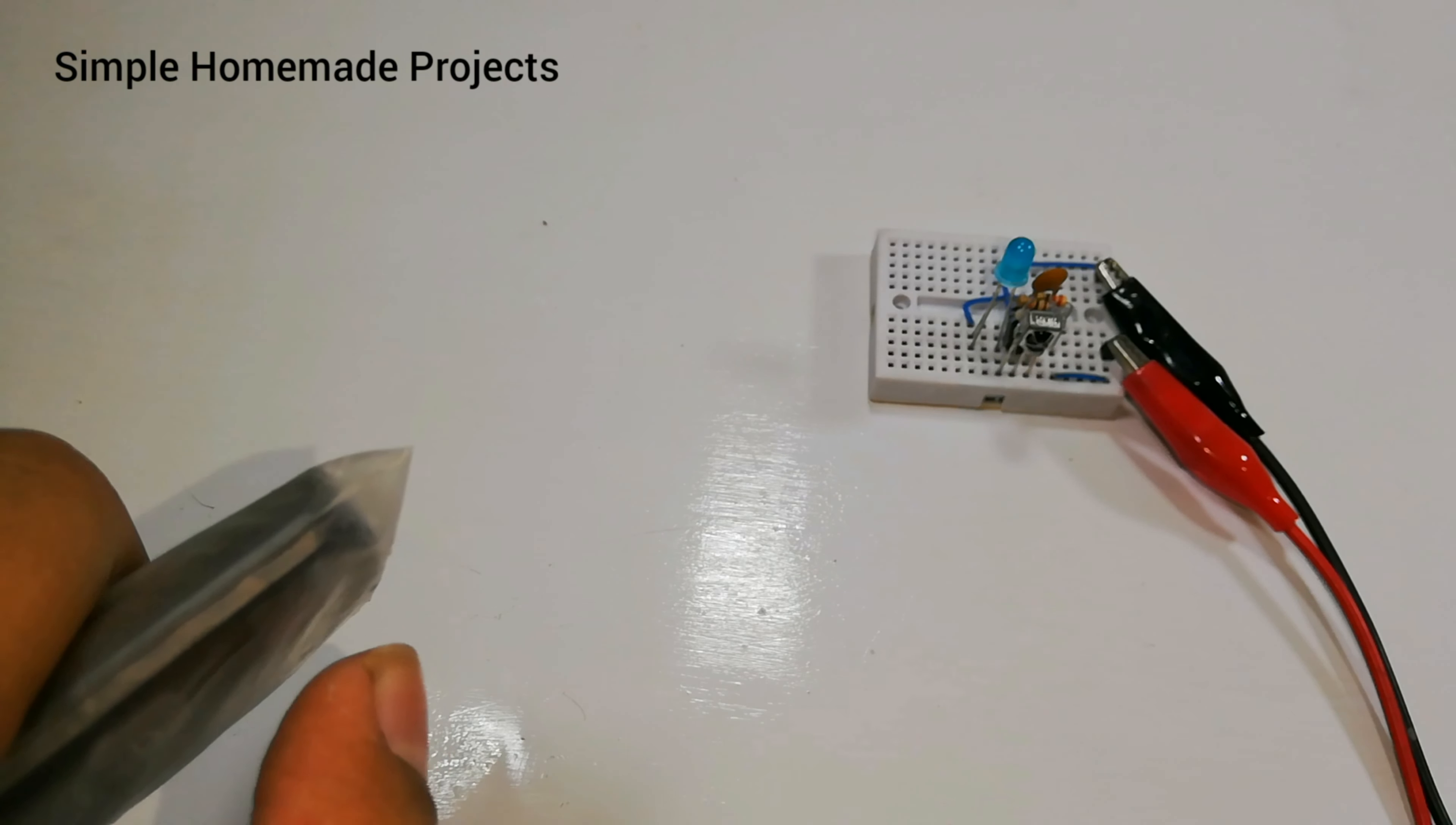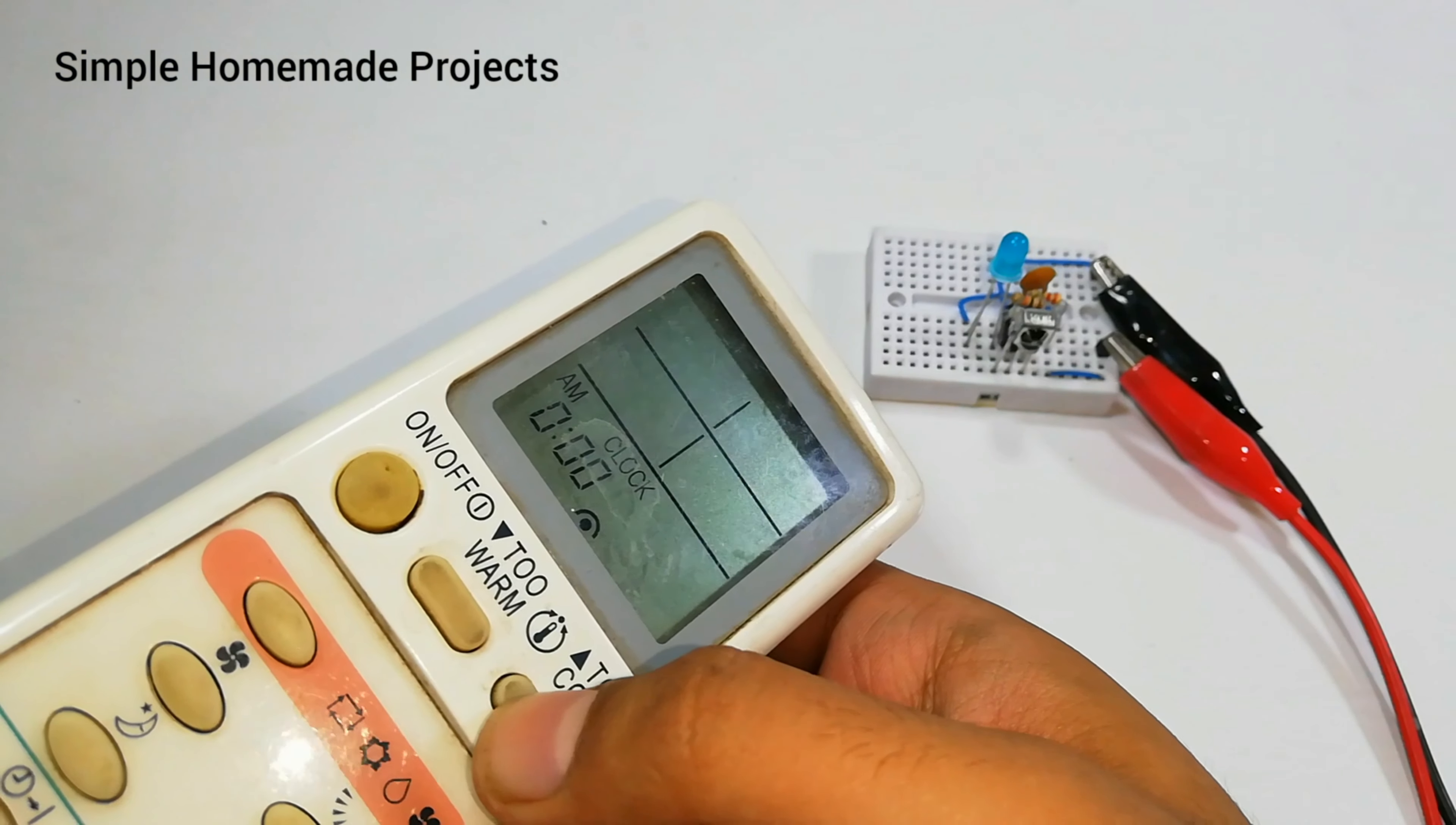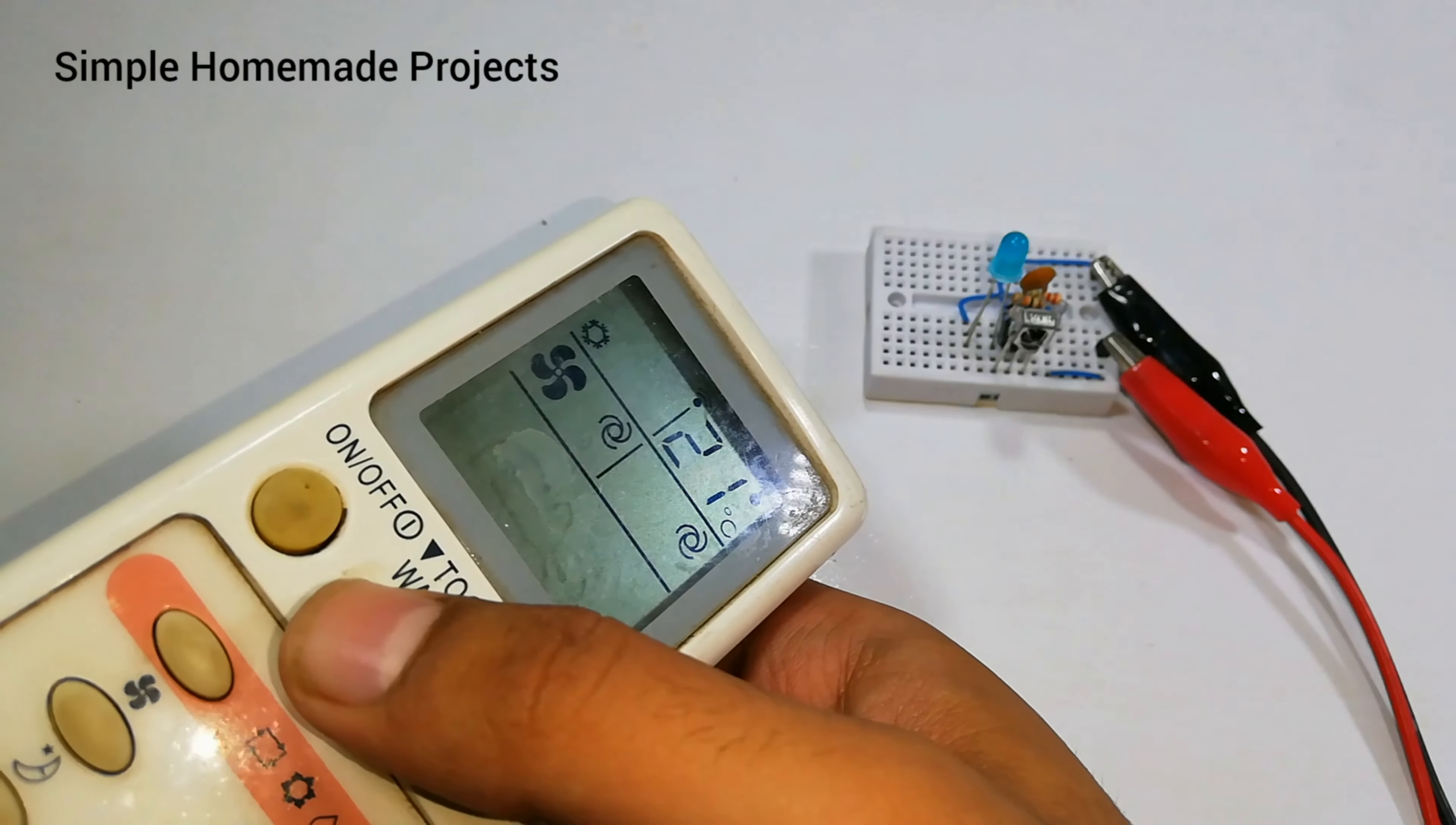Now I have an AC remote and you can see that LED is not blinking because there is not any signal transmitted and the remote is off. But when turned on it works just fine.